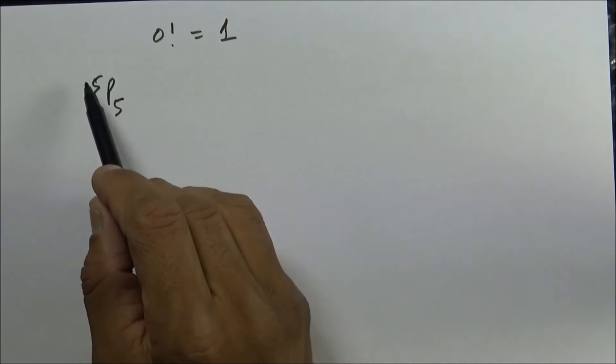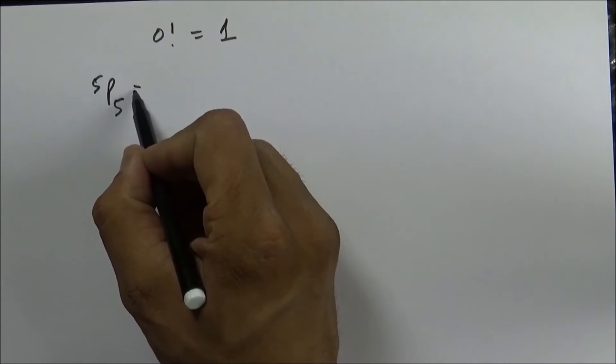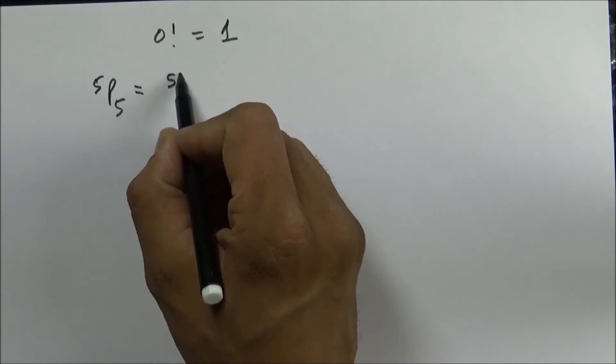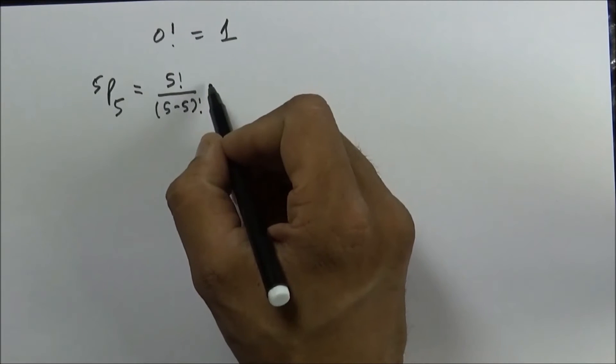Because there are five people for five places, the answer will simply be 5 factorial upon 5 minus 5, which is 0 factorial.